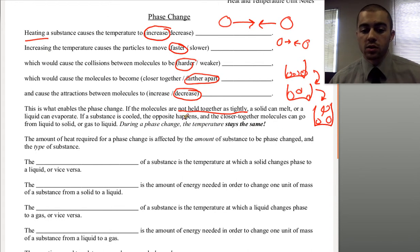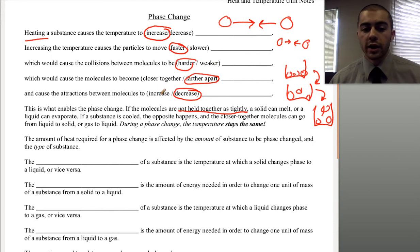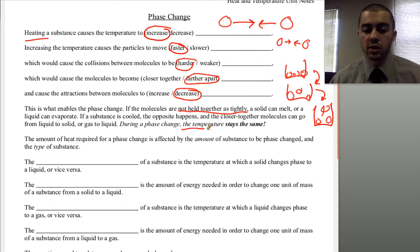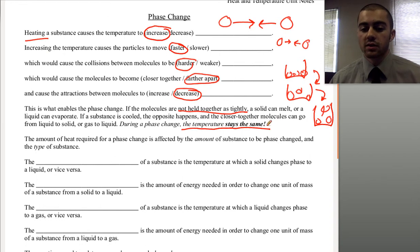If a substance is cooled, we go the other way: temperature decreases, molecules move slower, collide more weakly, move closer together, and attractions increase — that's how we go from a gas back to a solid. An important concept: during a phase change, the temperature stays the same. It takes energy to do the phase change, and the temperature stays constant while energy is being used for the phase change rather than for a temperature change.